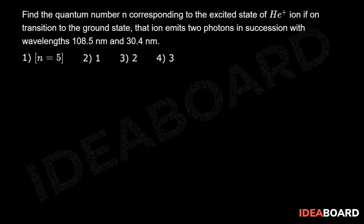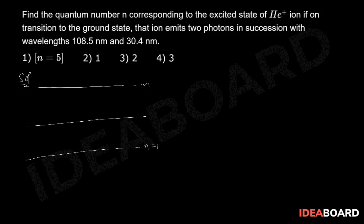Here, a helium plus ion — which is a hydrogen-like atom — undergoes de-excitation by emitting two photons in succession. This means the atom de-excites from the n state to the ground state n=1 via two steps. We introduce an intermediate energy level n dash.